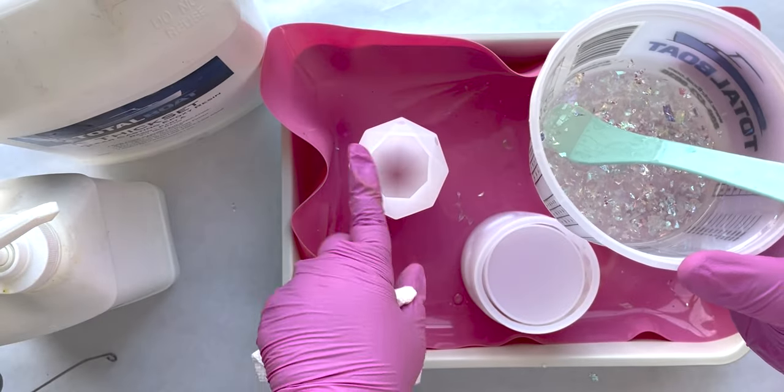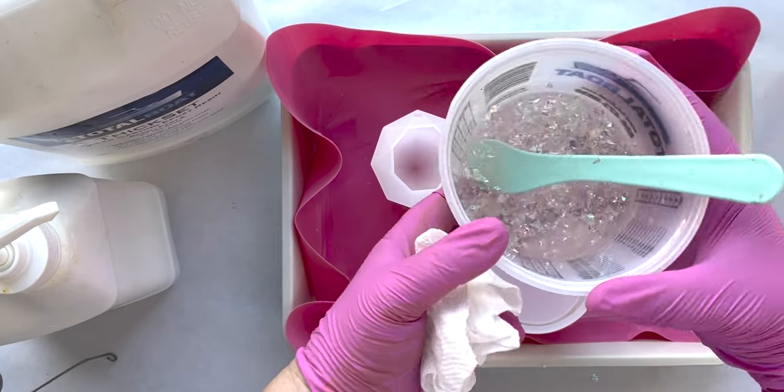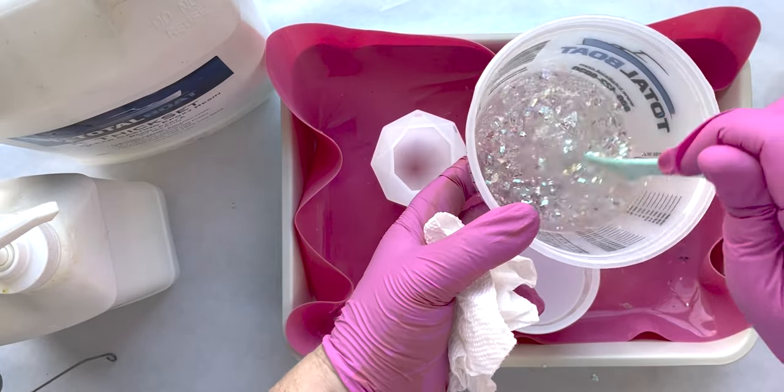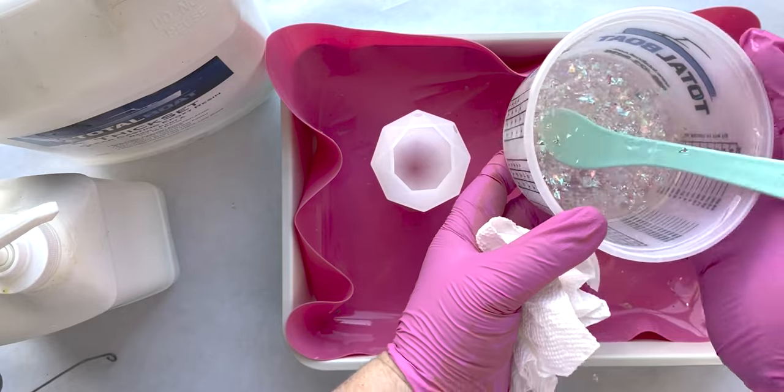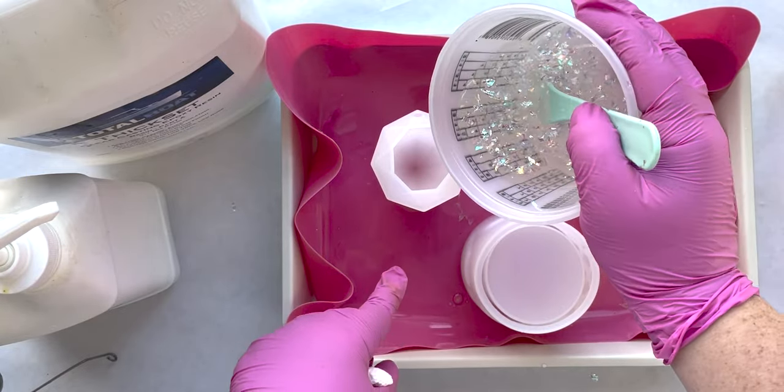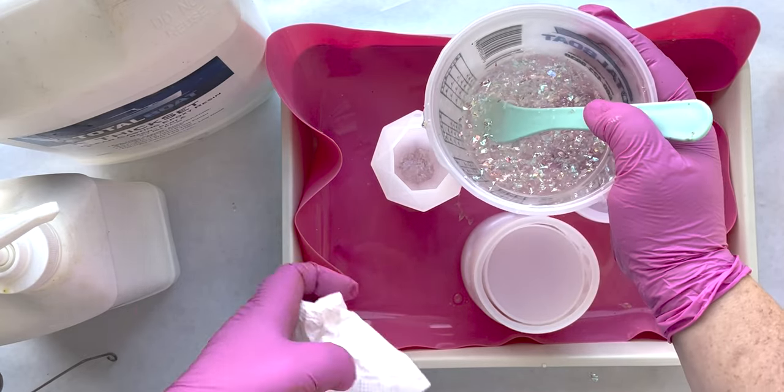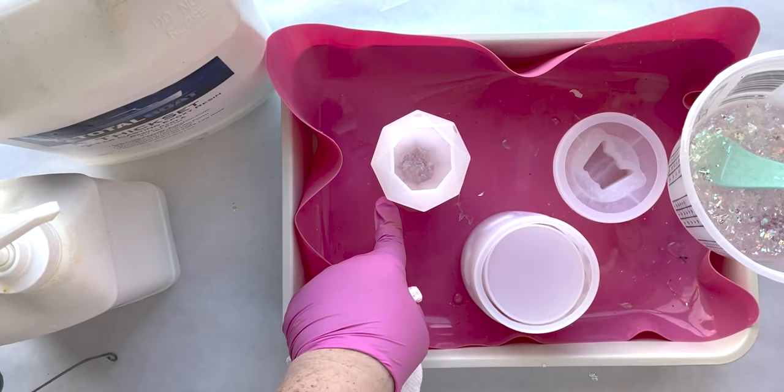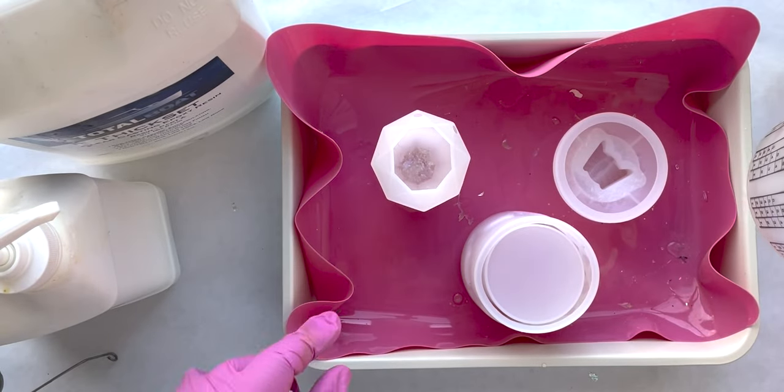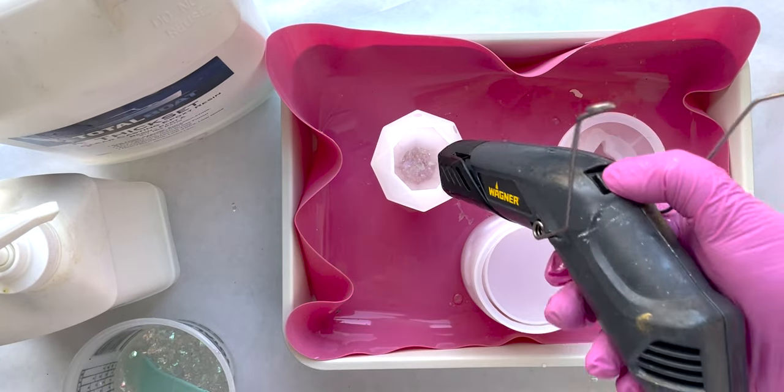All right so we're going to do the top layer of our ring cone here. A little bit of these iridescent flakes, we're just going to put them in and then we'll let it cure before we do the next layer. Oh that's good, don't need much for that bottom layer. Go ahead and pop those bubbles.